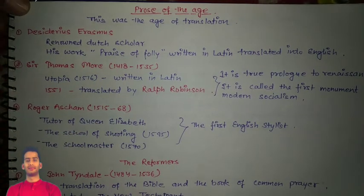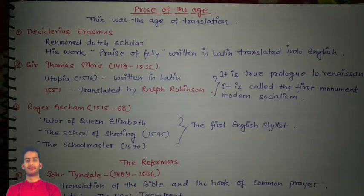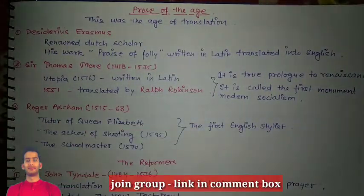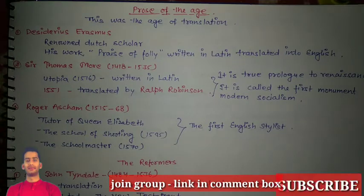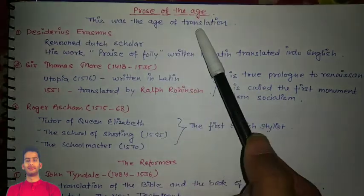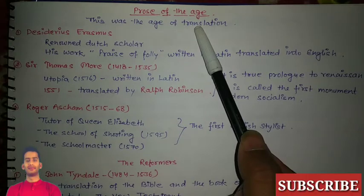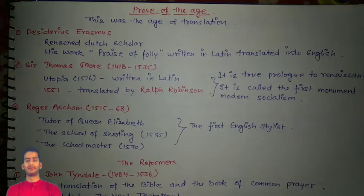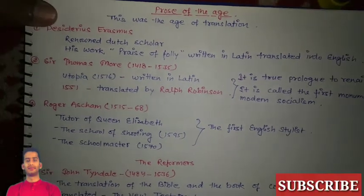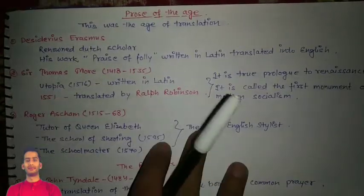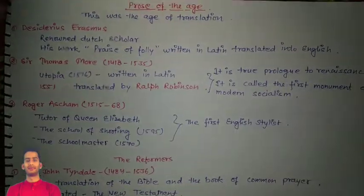Hello everyone, you are most welcome again on my channel. Today we are going to talk about prose in the Renaissance. Hopefully you have watched my previous seven videos on history of English literature. This was the age of translation — the Renaissance — because everything was coming from Italy, and in England there were great translation works. Here are some people who contributed to the development of prose.